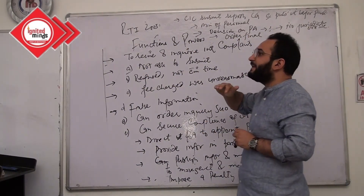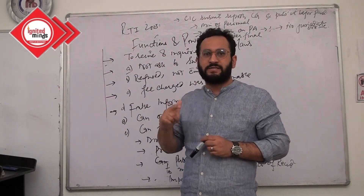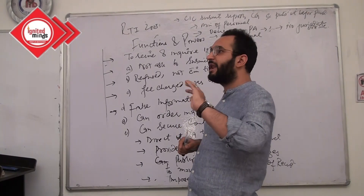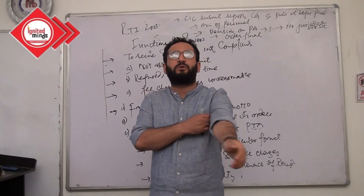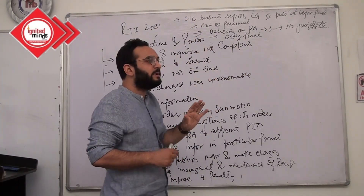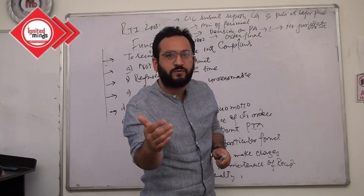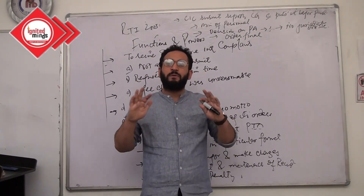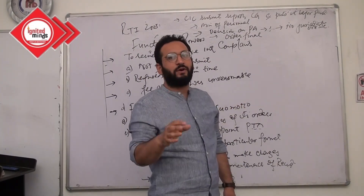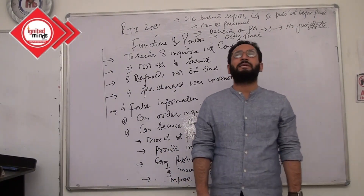Note that the CIC administratively falls under the Ministry of Personnel, which is a part of the Prime Minister's Office. The CIC submits its annual report to the Central Government — unlike NHRC which submits to the President directly. The Central Government then places it before both Houses of Parliament, where the opposition can raise issues and everyone gets to know the status of RTI and the functioning of the CIC.